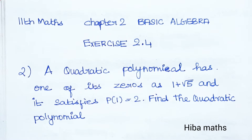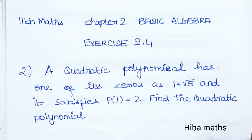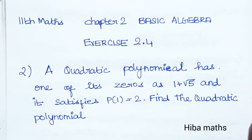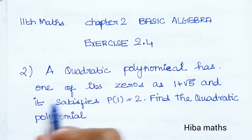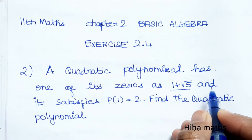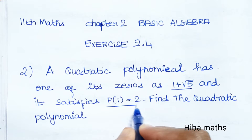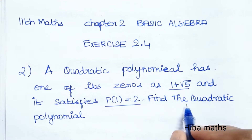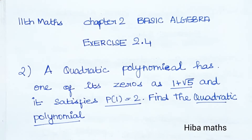Hello students, welcome to HibaMax 11th standard. This is Chapter 2: Basic Algebra, exercise 2.4, second question. A quadratic polynomial has one of its zeros as 1 plus root 5, and it satisfies p(1) = 2. Find the quadratic polynomial and the quadratic equation.